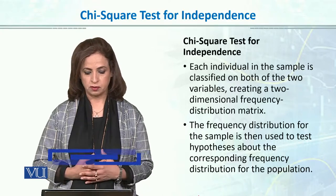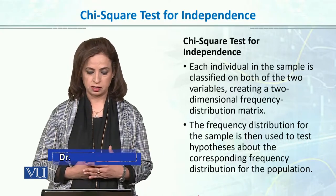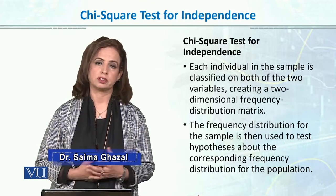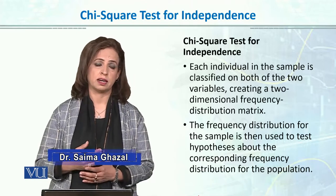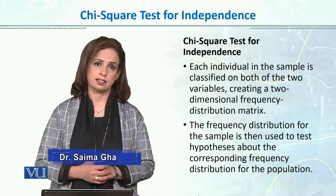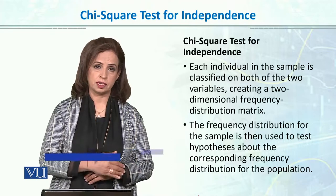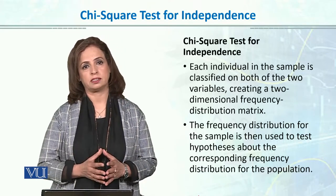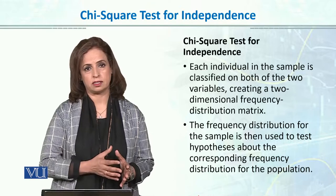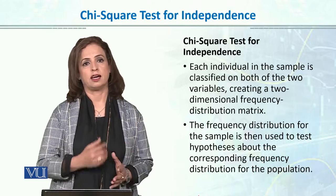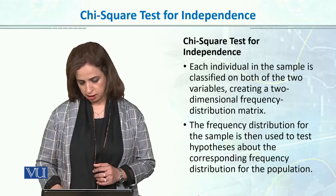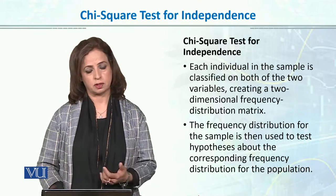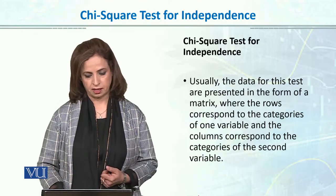The frequency distribution for the sample is then used to test a hypothesis about the corresponding frequency distribution for the population. In this case, we also have observed data in each category that we test against the null hypothesis, or a given distribution for the population that we check against.